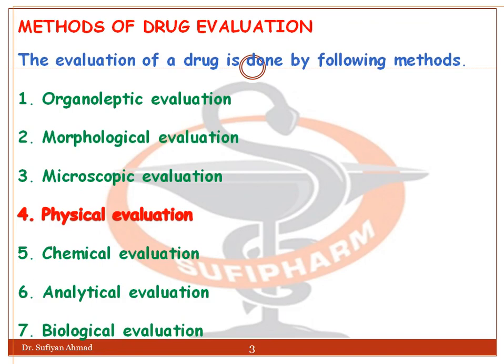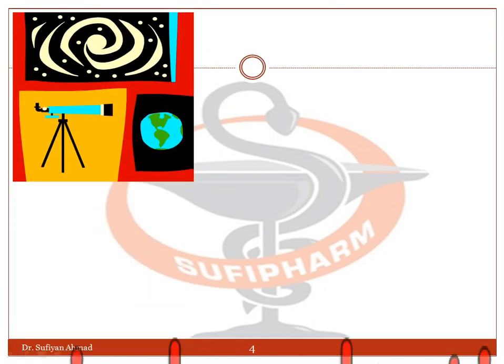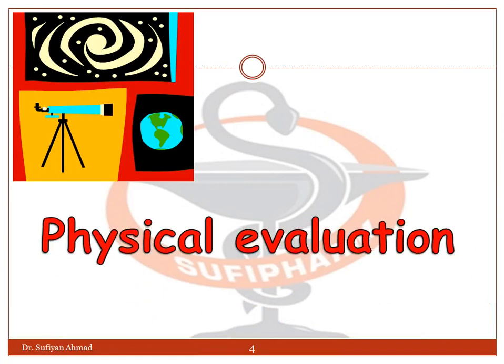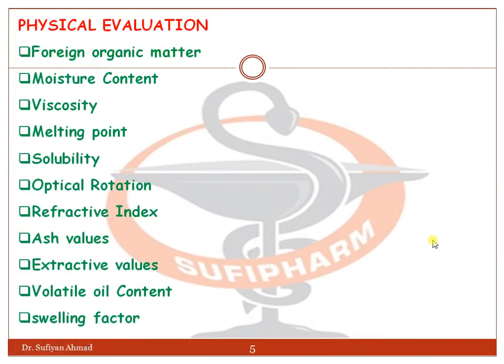In this session, we will discuss only the physical evaluation of crude drugs. The different parameters covered include: foreign organic matter, moisture content, viscosity, melting point, solubility, optical rotation, refractive index, ash value, extractive value, volatile oil content, and swelling factor.